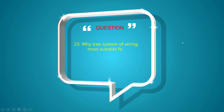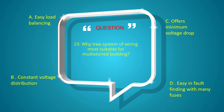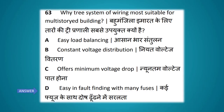Why is the three wire system of wiring more suitable for multi-storied buildings? Options: easy load balancing, constant voltage distribution, offer minimum voltage drop, easy in fault finding with many fuses. The answer is easy in fault finding with many fuses.